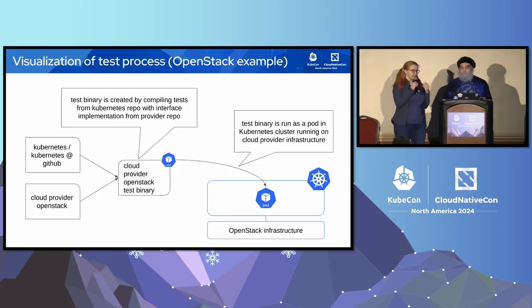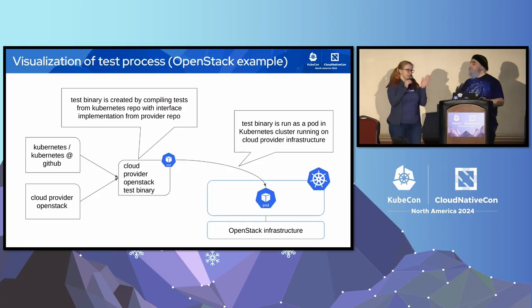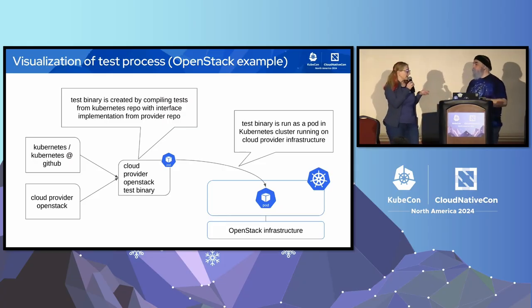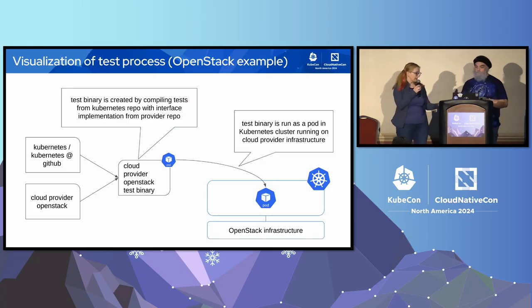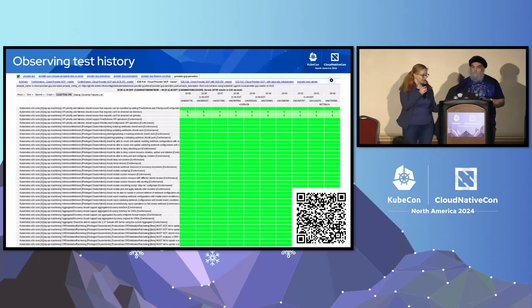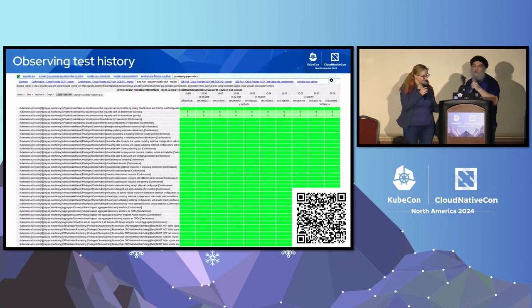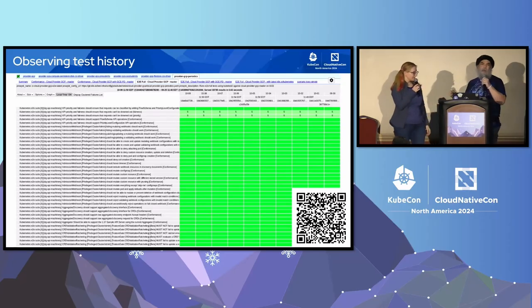There are pros and cons: there's limited storage for artifacts, but there's also history to look at. Let's look at observing history through test grid.